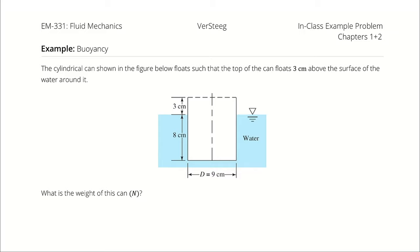The cylindrical can shown in the figure below floats such that the top of the can floats three centimeters above the surface of the water around it. What is the weight of this can in newtons?